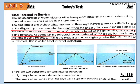There are two conditions for total internal reflection. First, light rays travel from a denser to a rare medium. Second, the angle of incidence of all the rays will be greater than the angle of their reflection — angle of incidence is always greater than the angle of reflection.